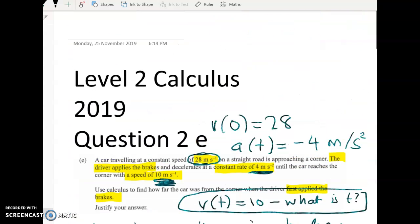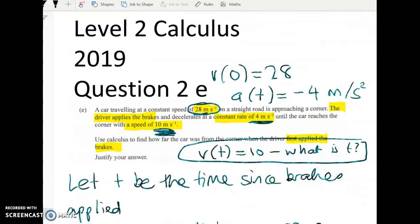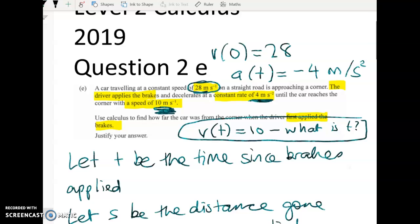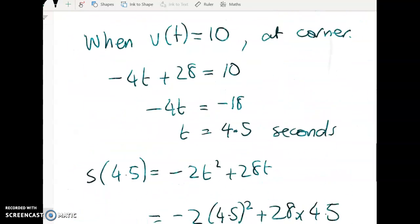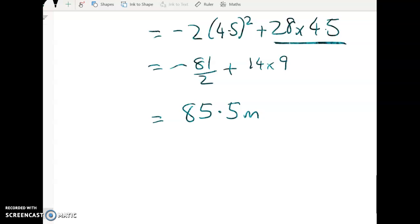So let's just go back up and check what we had to say. Right, well, we had to figure out how far the car was from the corner when the driver first applied the brakes. So if after 4.5 seconds the car has traveled 85.5 meters, that's how far it was from the corner, right?